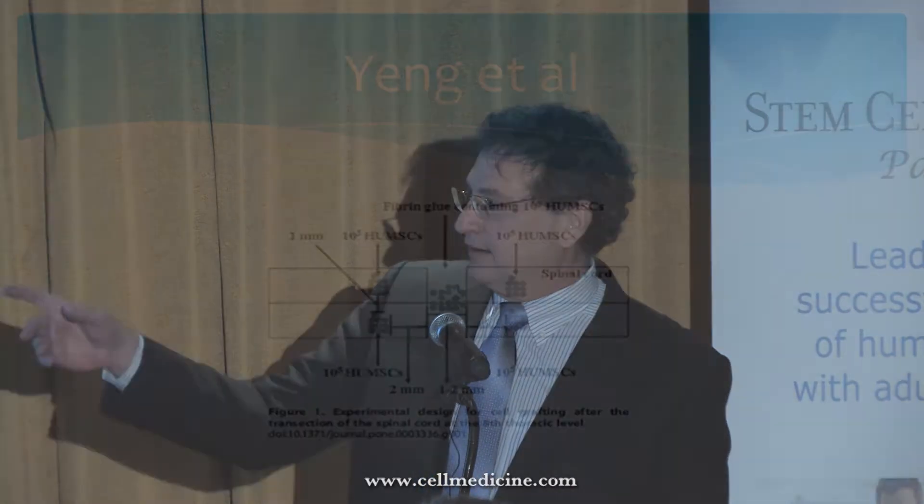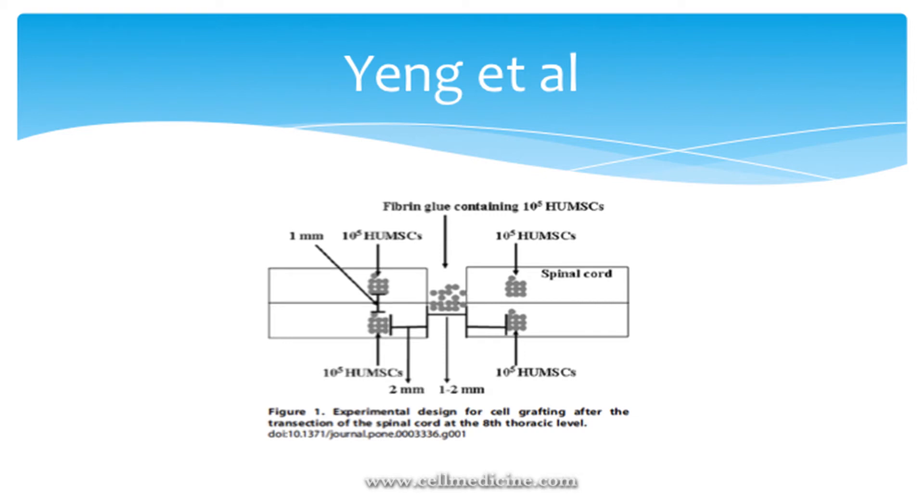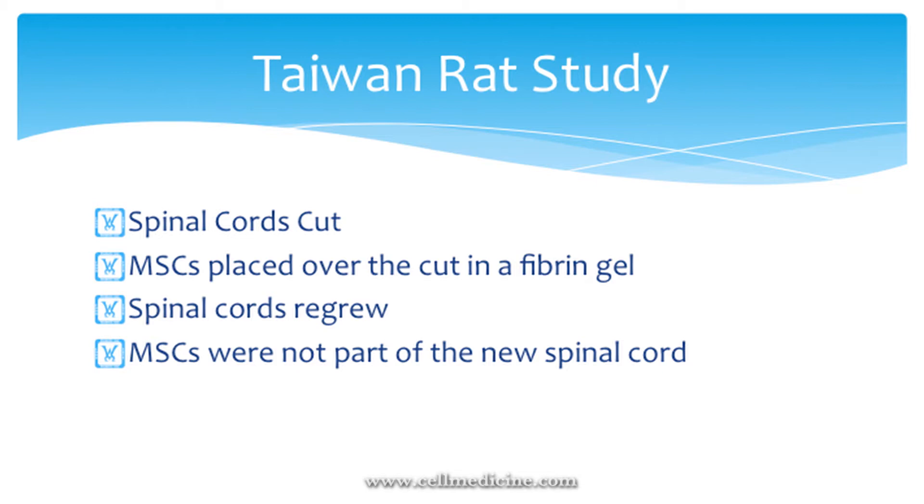This study was done in Taiwan using a rat model. They used human umbilical MSCs for a spinal cord injury where they completely cut the spinal cord. When cut completely, it retracts a little, leaving a small gap. They placed human MSCs in a fiber and glue—basically a clotted blood product—around and inside the gap. What they found was restoration of function, and the spinal cord actually resprouted and grew back to itself.